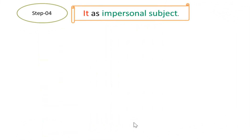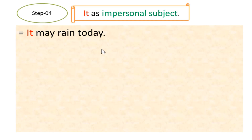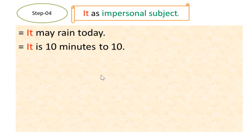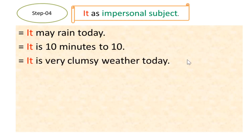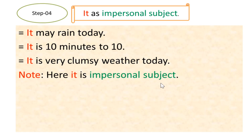Now step 4 — 'it' as impersonal subject. Example: 'It may rain today.' Here 'it' is an impersonal subject with no specific reference. Another example: 'It is 10 minutes to 10.' And: 'It is freezing, cloudy weather today.' In all three examples, 'it' functions as an impersonal subject. Note that introductory 'it' is also called empty subject.